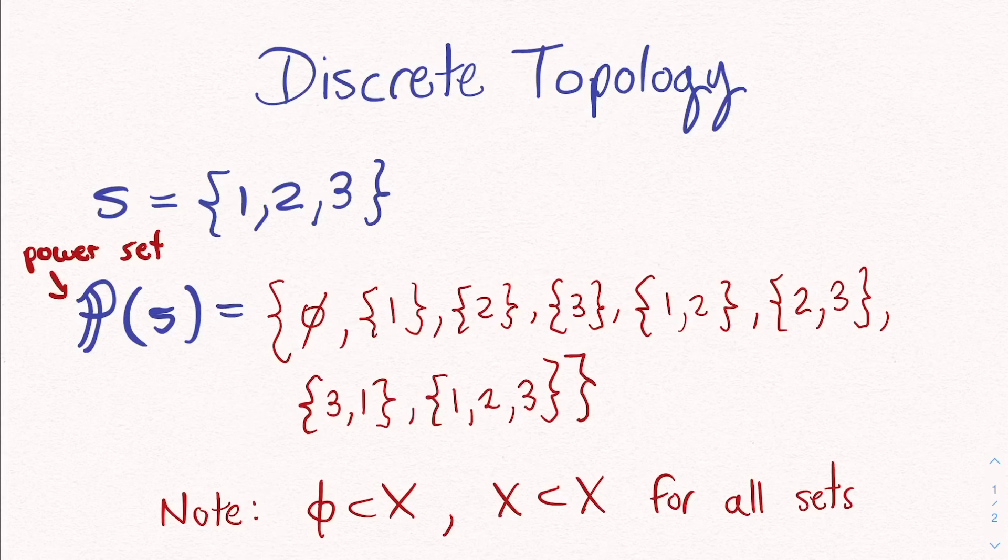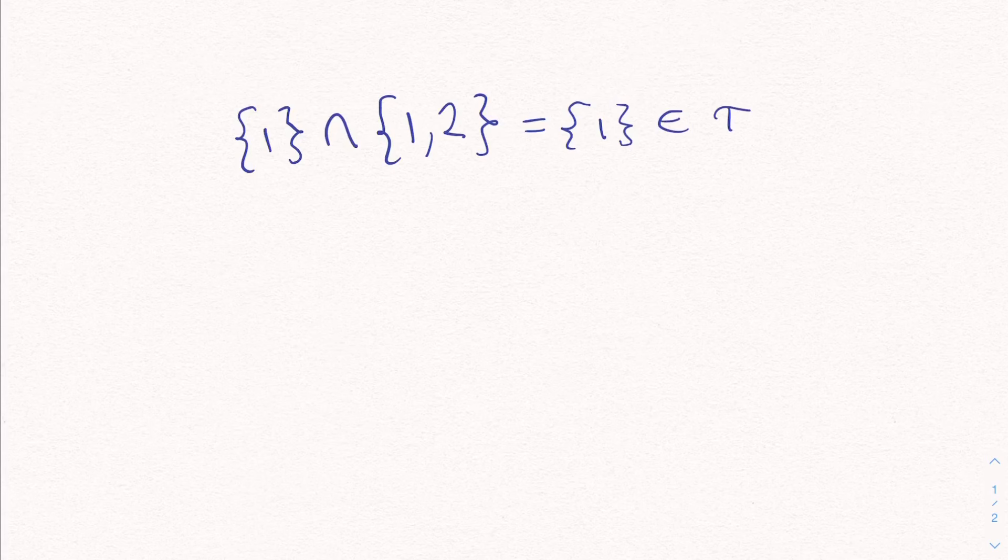So let's do a few examples here. So let's take the subset 1 and the subset 1, 2. If we take the intersection of those two sets, we get back the set 1, which you'll note is an element of our Tau. And if you choose any possible intersection or any possible union of these sets, you end up staying within the power set. There's no sets that you can choose such that the union or intersection of those sets is somehow not an element of the power set. So this is satisfied as well.